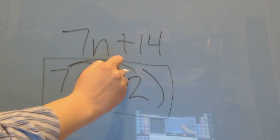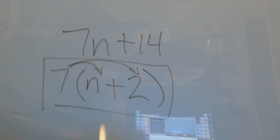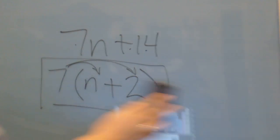Alright, so this would be your final answer because you can't go any simpler than this. And if you were to distribute back out, you would get the 7n plus 14. Alright, moving on.